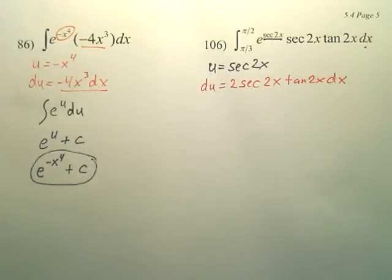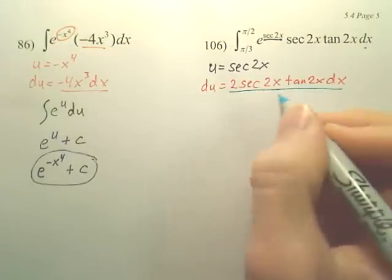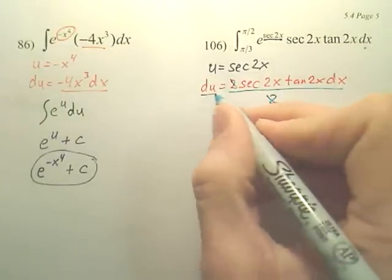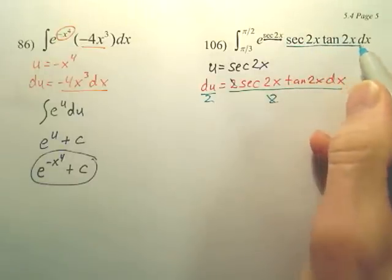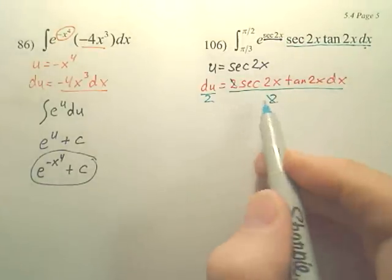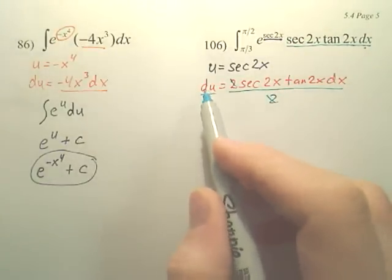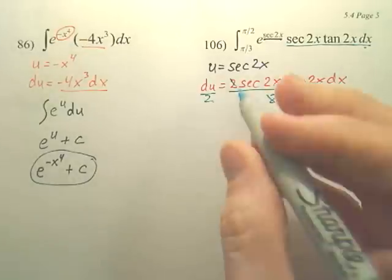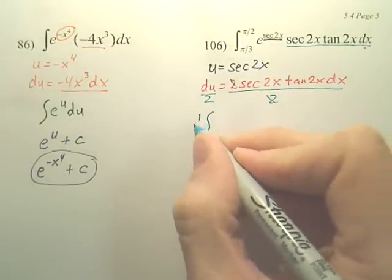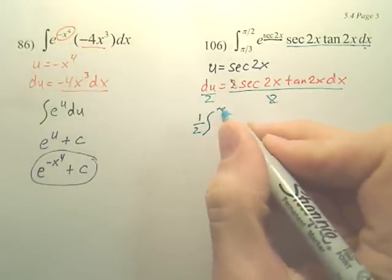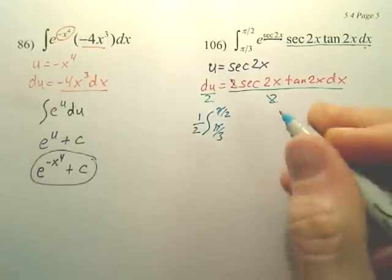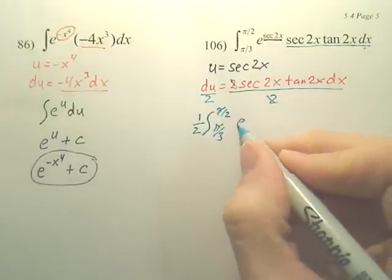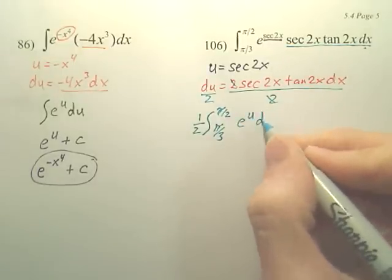And what happens a lot of times is people forget to divide this 2 over, because this matches this. But this 2 has to go over, and you have a 1 half, which a lot of people forget. So I now have a 1 half out front, a pi over 2, a pi over 3, and an e to the u, du.